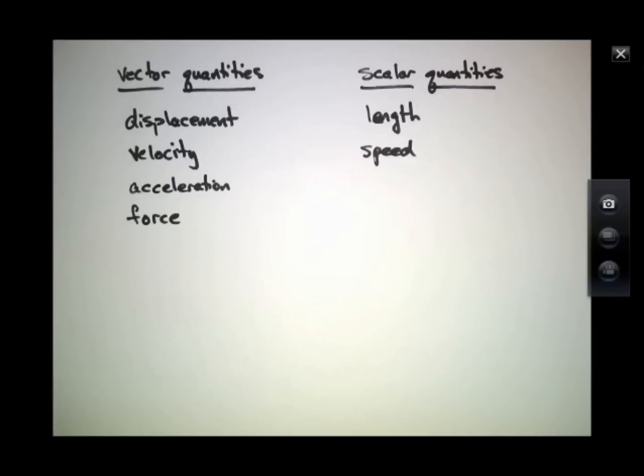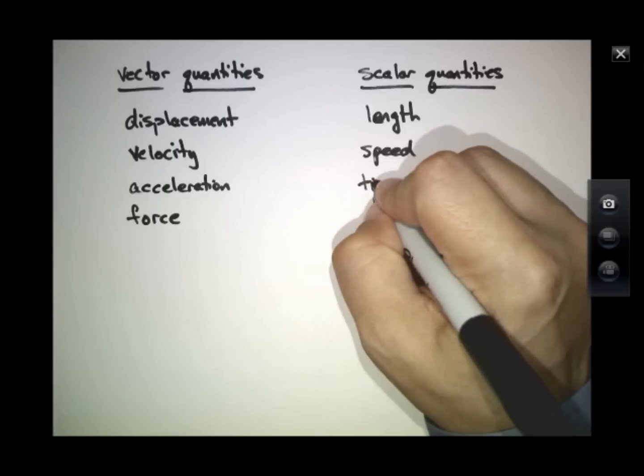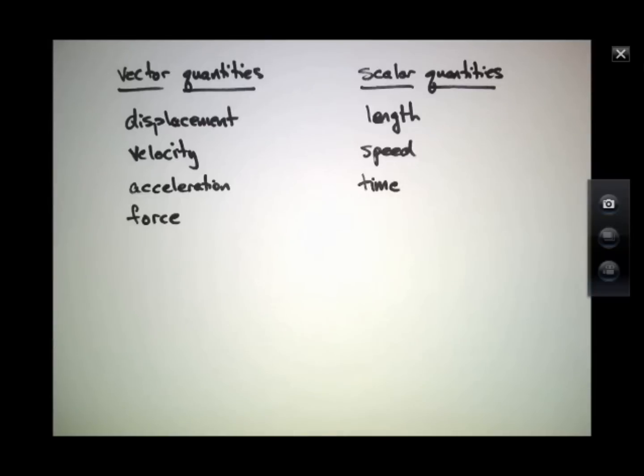And there are other quantities in here that have only scalar versions of them. There's no vector version. For example, time. Time is a scalar. There's no direction to seconds. How many seconds were you in the room? Three seconds. There's no direction to that. Because time is not in three-dimensional space.